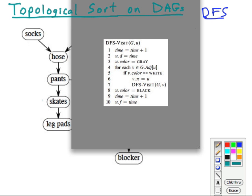Looking at the main recursive procedure for DFS: when you set the finishing time of a vertex, you then add it to the beginning of a linked list. Essentially, that's like a push.